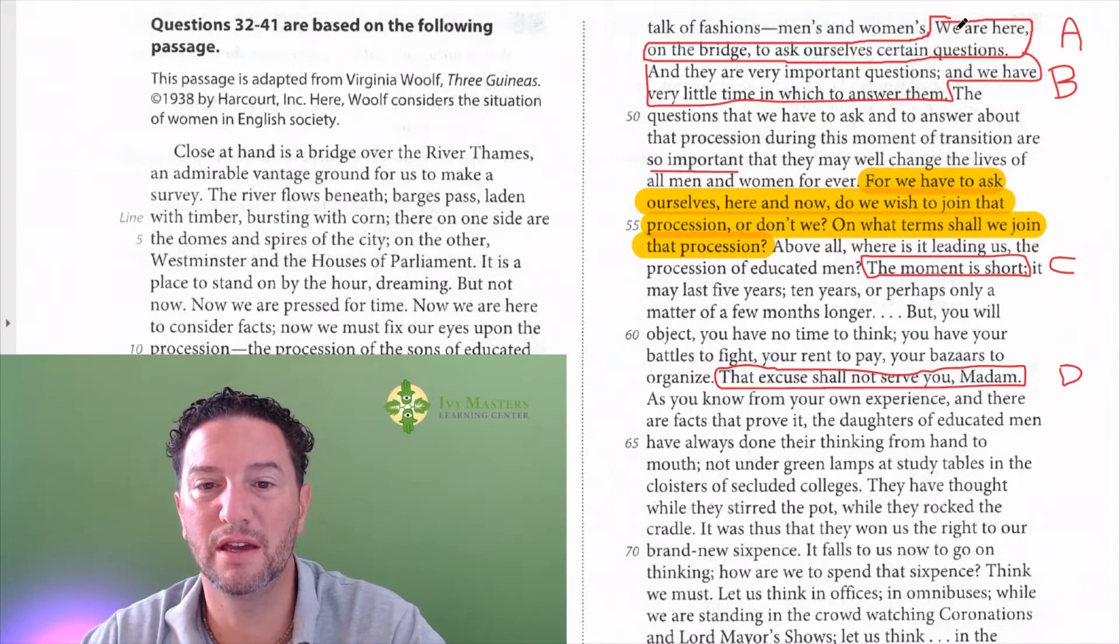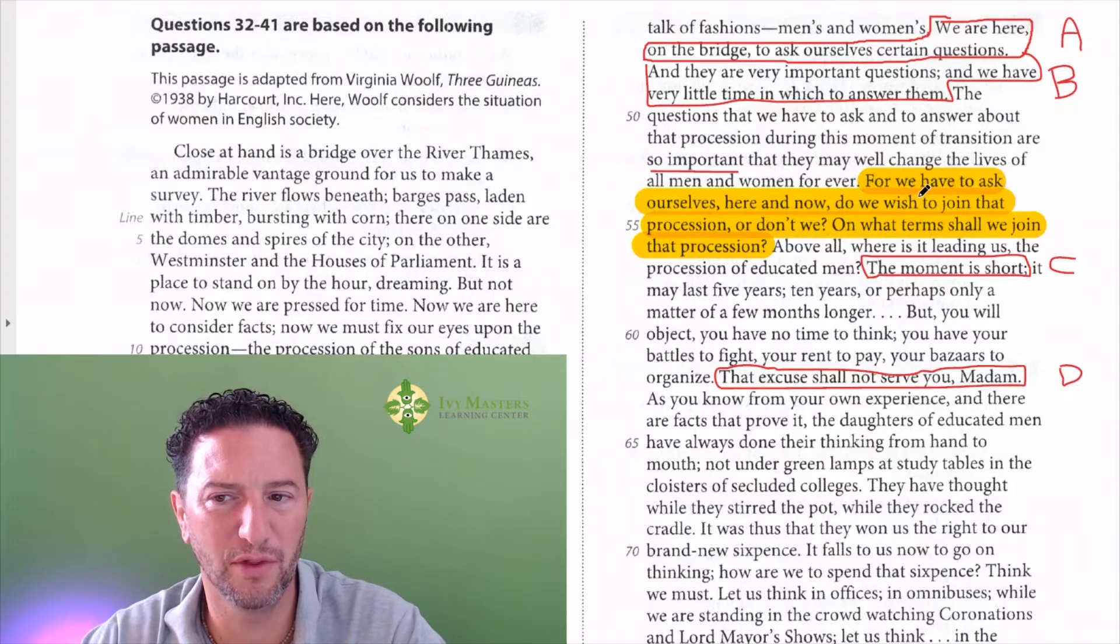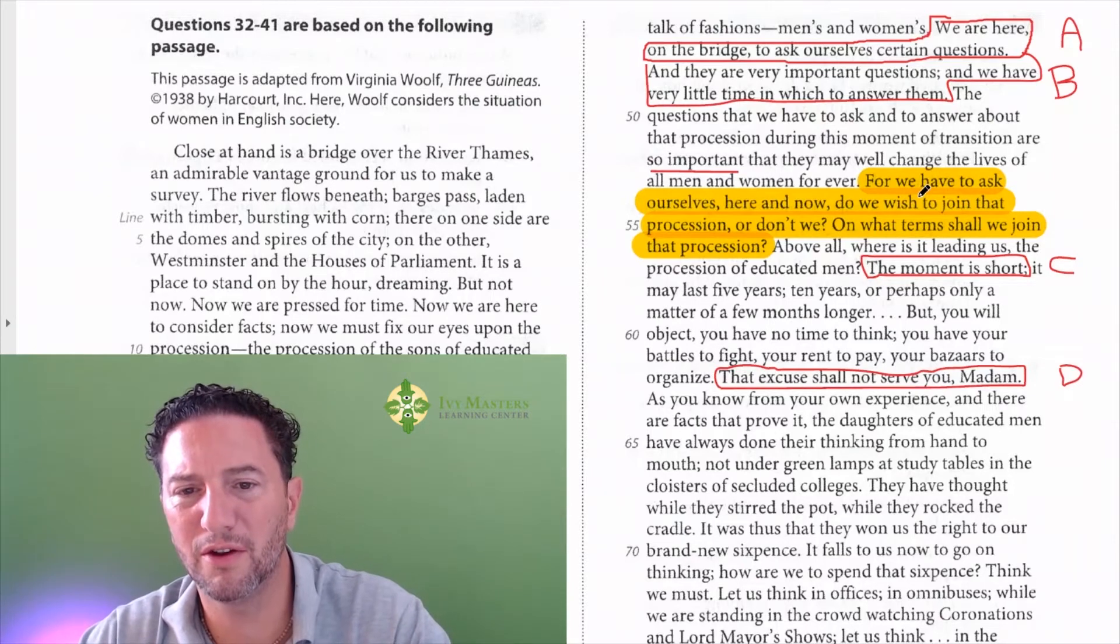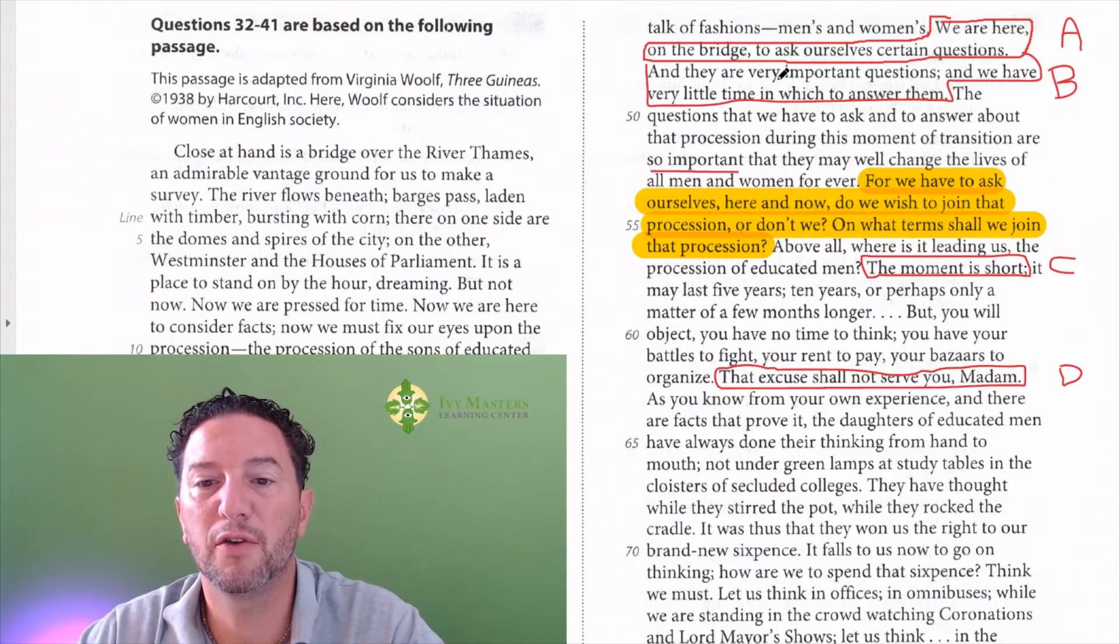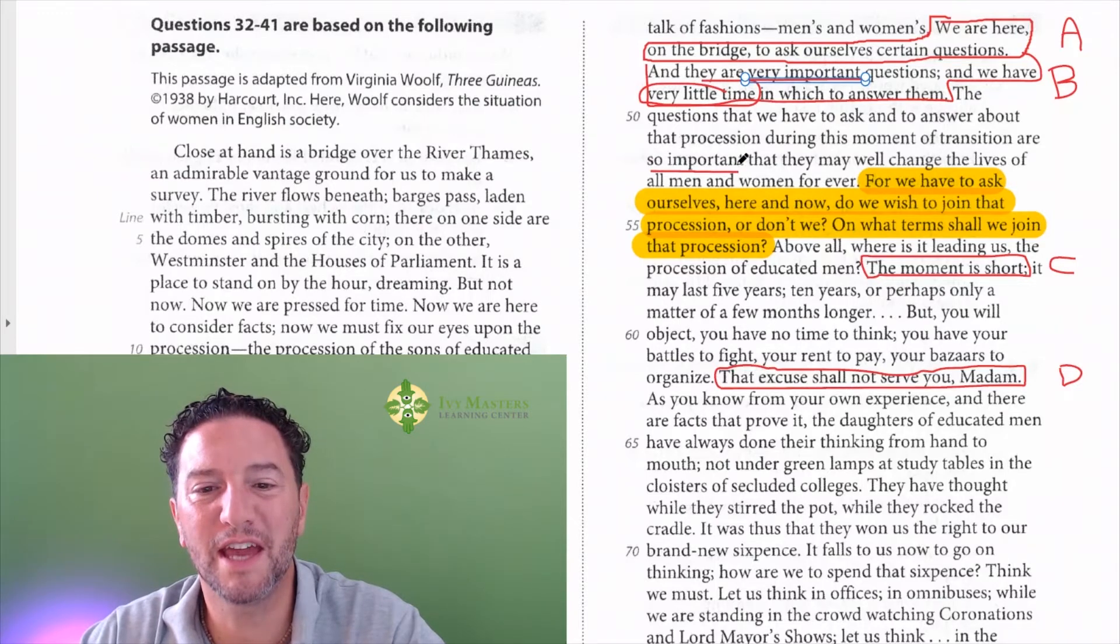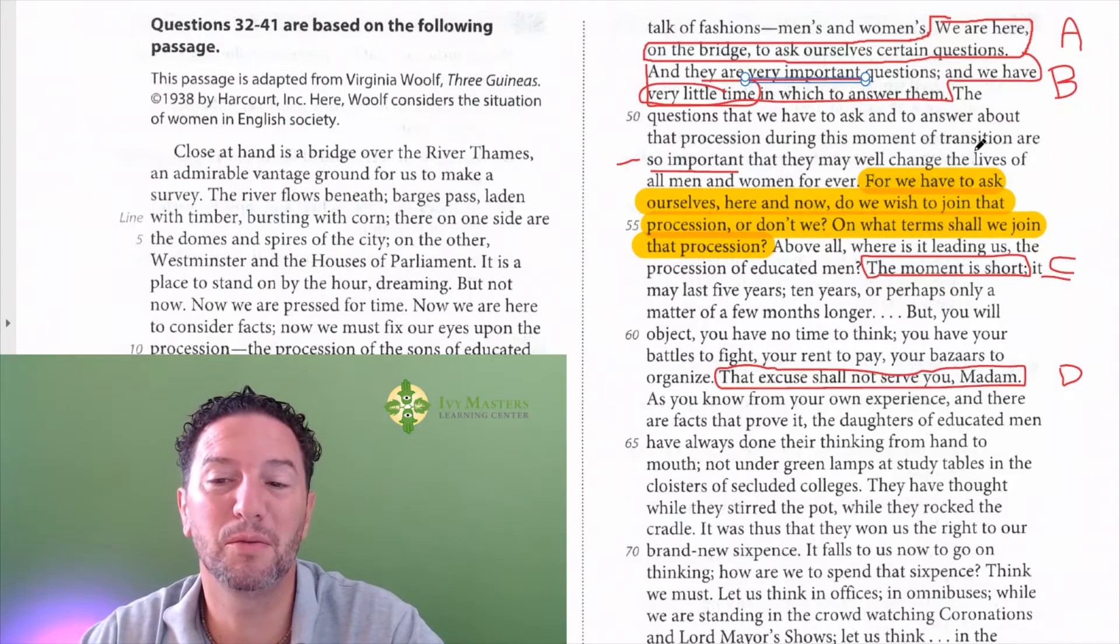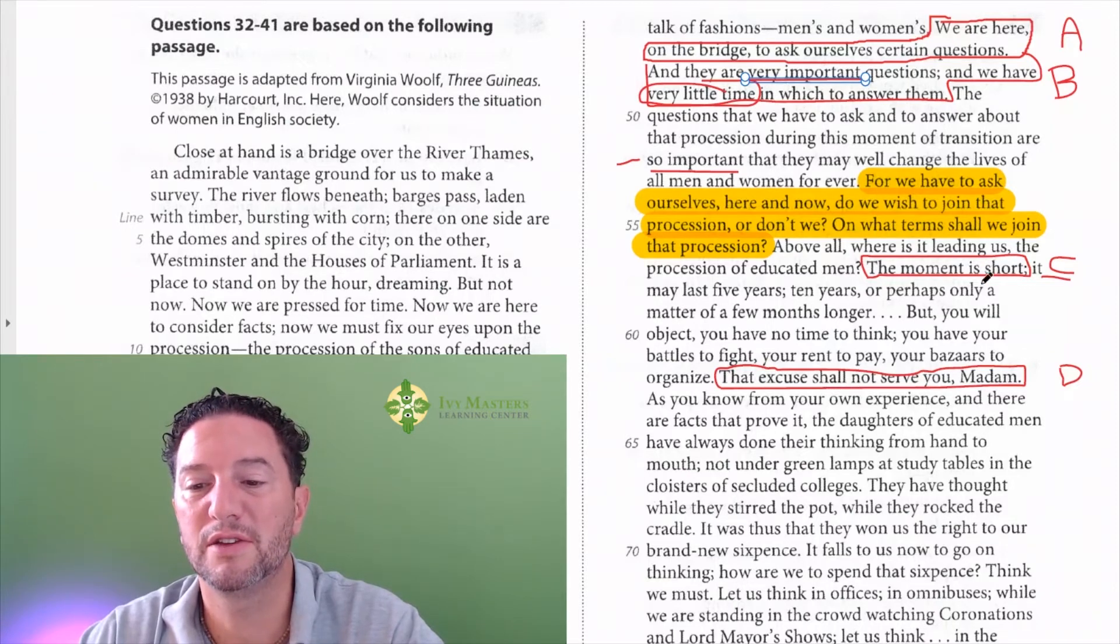Answer choice A, we're here on the bridge to ask ourselves certain questions. That's just saying that you're going to ask yourself those. We don't get two things there either. And they are very important questions and we have very little time in which to answer them. So that actually captures the so important here. And the very little time is like the moment is short. Answer choice B has given us two things. Looks like maybe we'll look for those things in the answer choices.